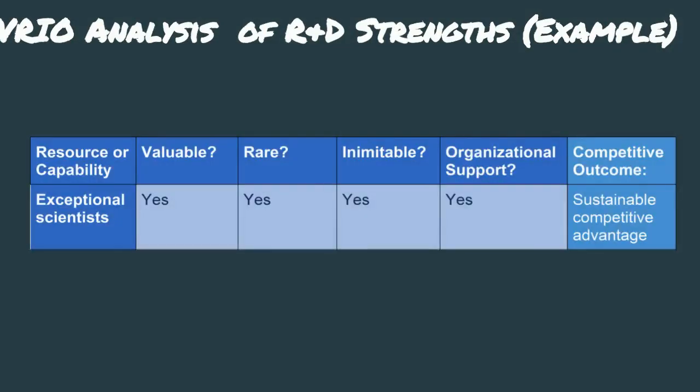Now we're going to apply our VRIO analysis to our R&D strengths, starting with our exceptional scientists. We might decide yes, they're valuable, they are rare, they are difficult to imitate, and we have good organizational support to leverage them. So we decide our exceptional scientists are a sustainable competitive advantage.